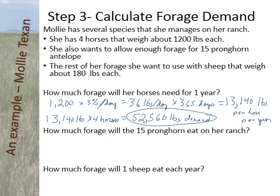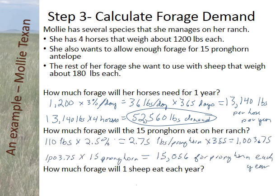Now let's look at the pronghorn. Each pronghorn weighs about 110 pounds. They're ruminants, so they eat 2.5% of their body weight per day — 2.75 pounds per day. Times 365 days means each pronghorn eats about 1,003.75 pounds per year. Times 15 pronghorn that Molly regularly sees on the ranch gives a total demand of 15,056 pounds for all pronghorn each year.